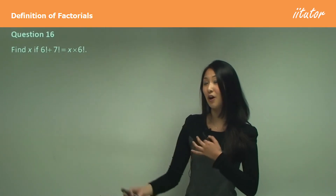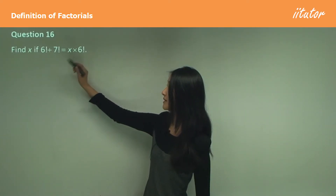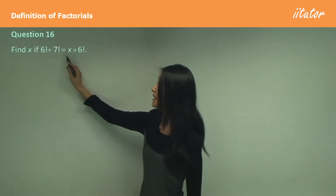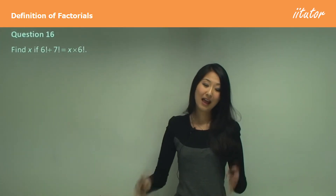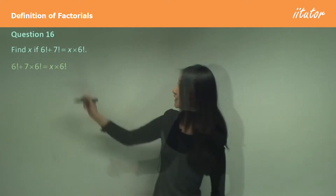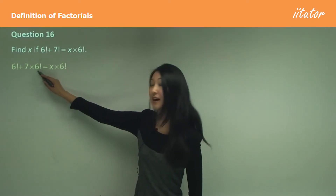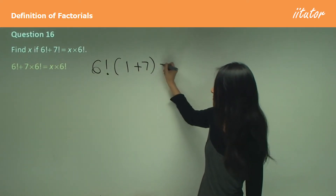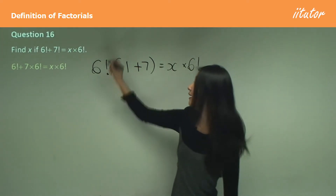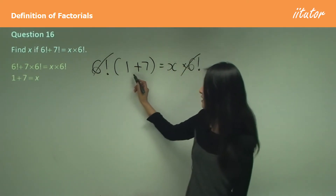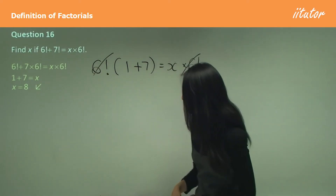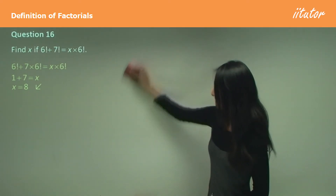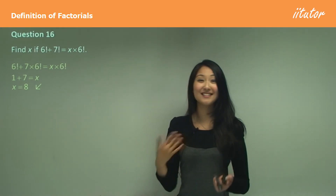Question 16: find x if 6 factorial plus 7 factorial equals x times 6 factorial. We need to factorize 6 factorial out of the left side. First, change 7 factorial to 7 times 6 factorial. Now factorize 6 factorial out: 6 factorial times (1 + 7) equals x times 6 factorial. Cancel the 6 factorials, so x equals 1 + 7, which equals 8.